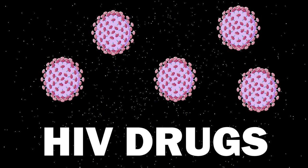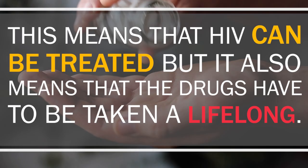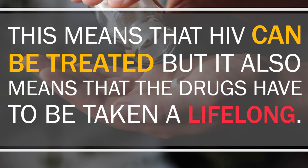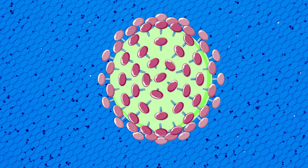HIV drugs mostly try to mess with the life cycle of the virus to keep the number of active particles low. This means that HIV can be treated but it also means that drugs have to be taken lifelong. HIV can also become resistant over time which means that the drugs do not work properly anymore. And these are reasons why we need a cure for HIV.